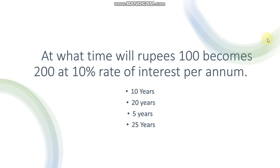Next question is at what time will rupees 100 become rupees 200 at 10% rate of interest per annum? First option is 10 years, second is 20 years, third is 5 years, and fourth is 25 years. Correct answer is 10 years.